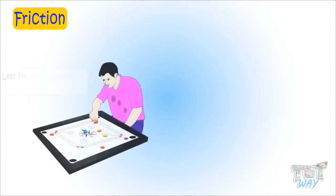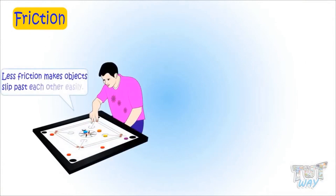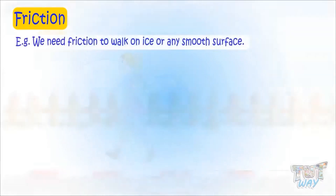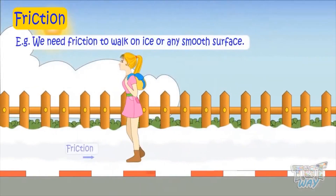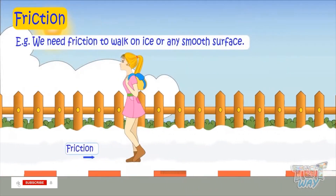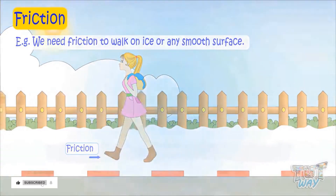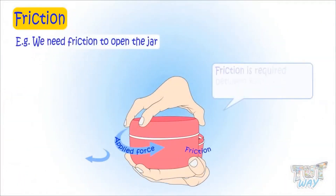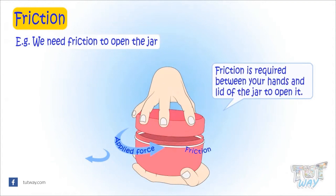When the friction is less, the objects slip past each other easily, and when the surfaces are rough, the objects do not move against each other easily. For example, you need friction between your shoes and ice to walk on it, and you need friction between your hands and the lid of the jar to open it.